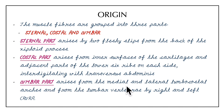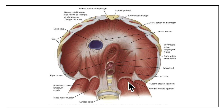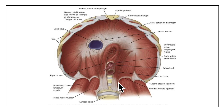The lumbar part arises from the medial and lateral lumbocostal arches and from the lumbar vertebrae by the right and left crura. The medial lumbocostal arch, or medial arcuate ligament, is a tendinous arch in the fascia covering the upper part of the psoas major. Medially it is attached to the side of the body of the L1 vertebra and is continuous with the lateral margin of the corresponding crus. Laterally it is attached to the front of the transverse process of the L1 vertebra.